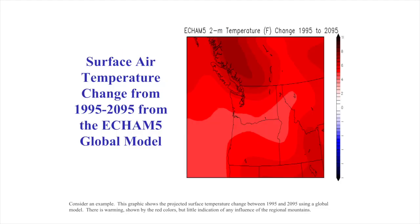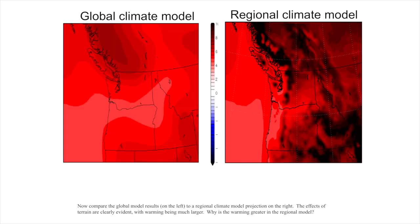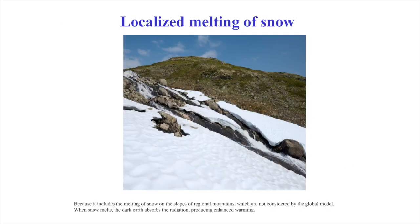Consider an example. This graphic shows the projected temperature changes at the surface between 1995 and 2095 using a global climate model. There's warming shown by the red colors, but little indication of any influence of the regional mountains. Now compare the global model results on the left to a regional climate projection on the right. The effects of terrain are clearly evident, with warming being much larger in places. Why is the warming greater in the regional climate model? Because it includes the melting of snow on the slopes of regional mountains, which are not considered by the global model.